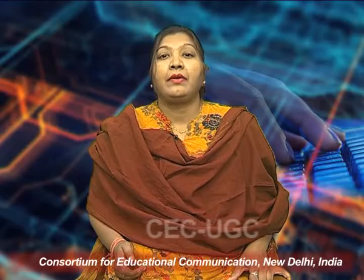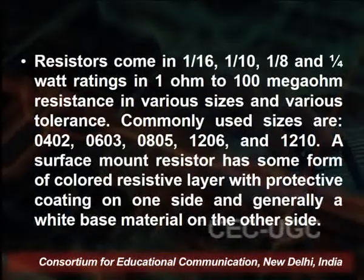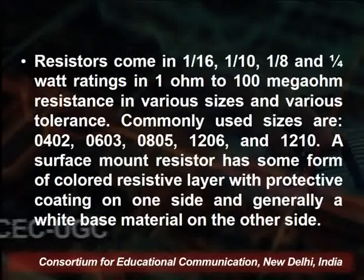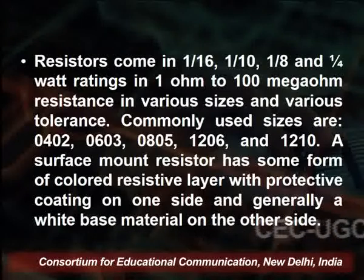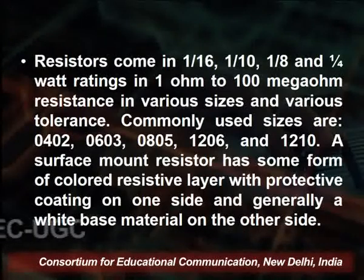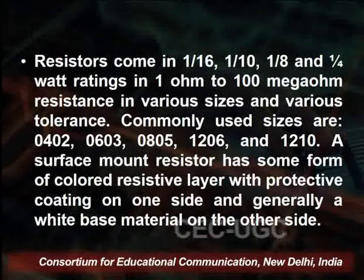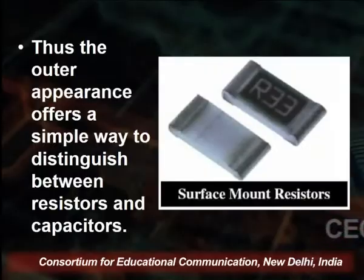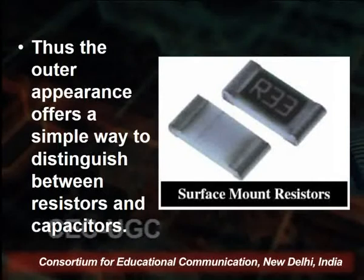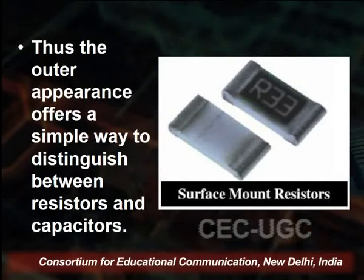Resistors used in SMD come in 1/60, 1/10, 1/8, and 1/4 watt ratings, in 1 ohm to 100 megaohm resistances, in various sizes and tolerances. Commonly used sizes are 0402, 0206, 0308, 0516, 1206, and 1210. A surface mount resistor has some form of colored resistive layer with a protective coating on one side and generally a white base material on the other side. The outer appearance offers a simple way to distinguish between resistors and capacitors. These are the resistors used for surface mount.